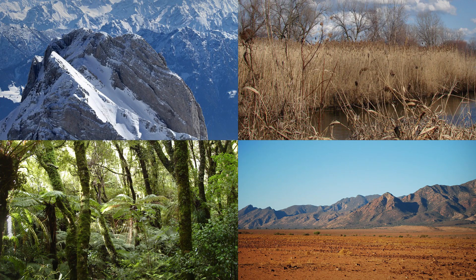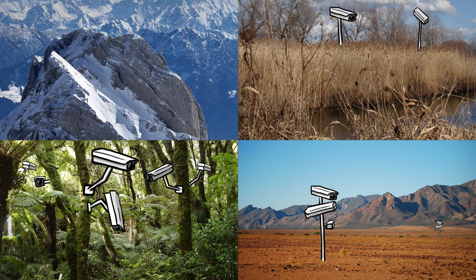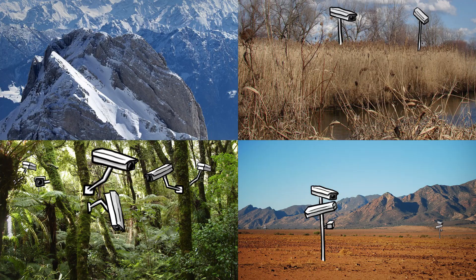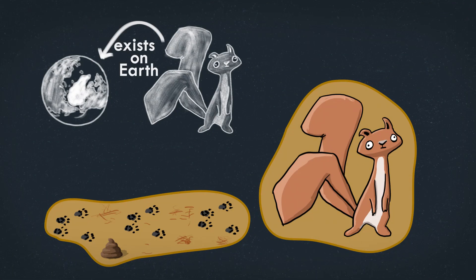We would have to see every inch of the planet, simultaneously in case it moves around, and see no squirrel in all those places, to be able to have observed the absence of the animal. Which, let's say is impossible. Although maybe this is a bad example.